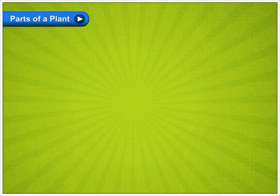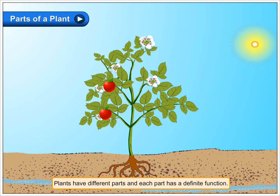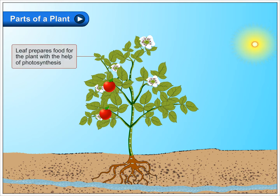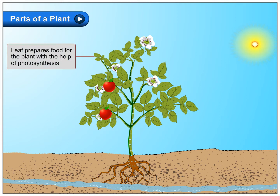Parts of a plant. Plants have different parts and each part has a definite function. The leaf prepares food for the plant with the help of photosynthesis.